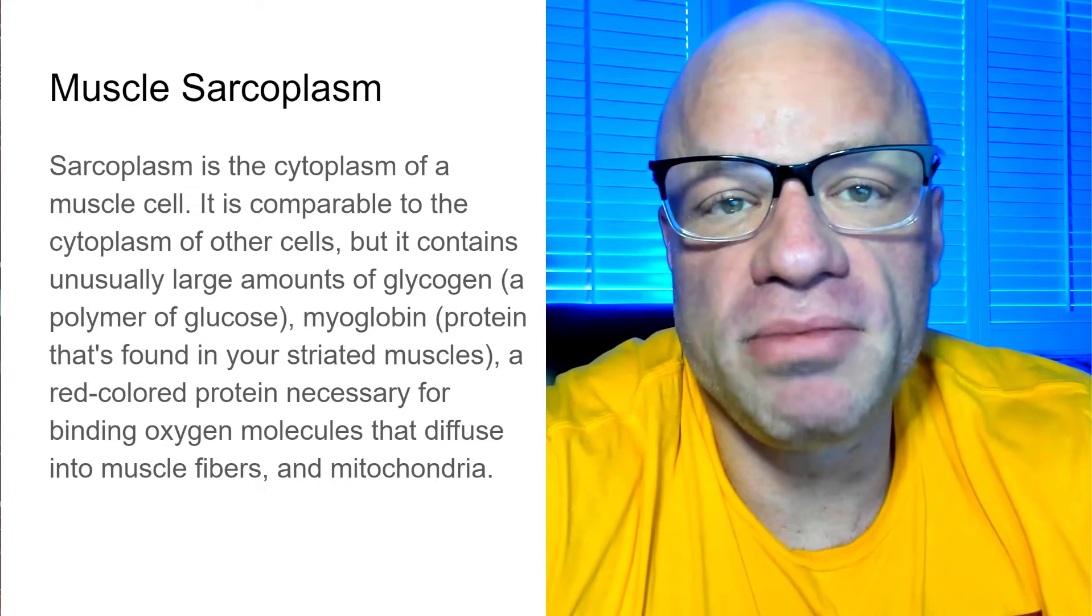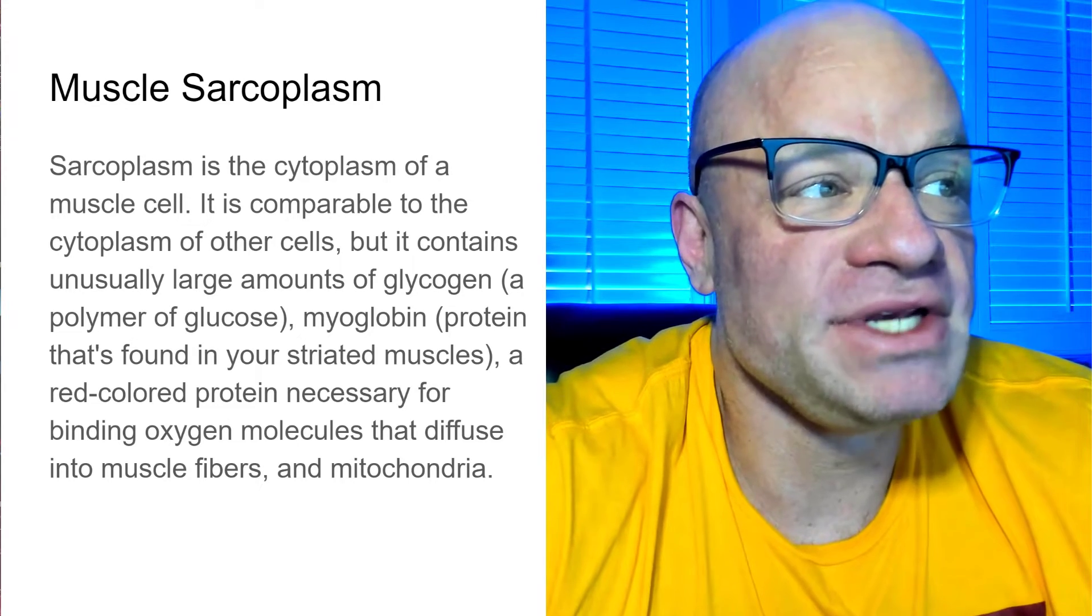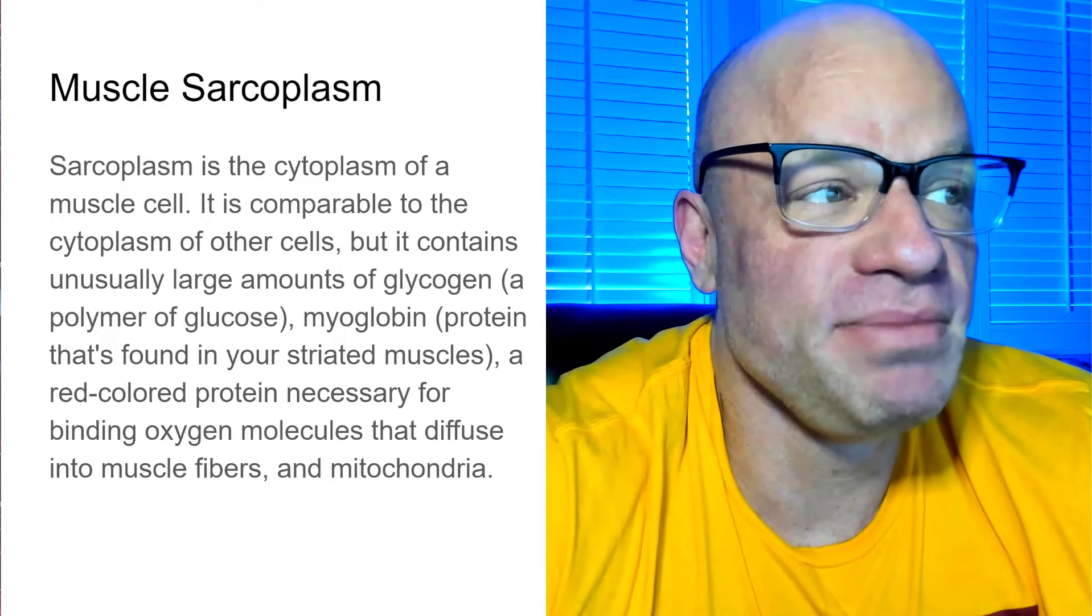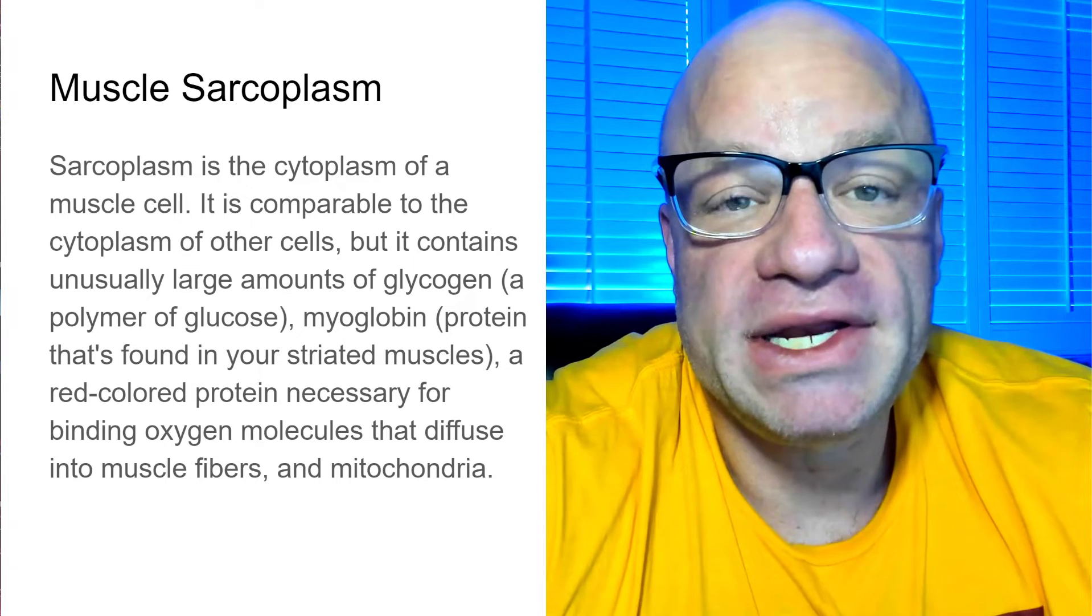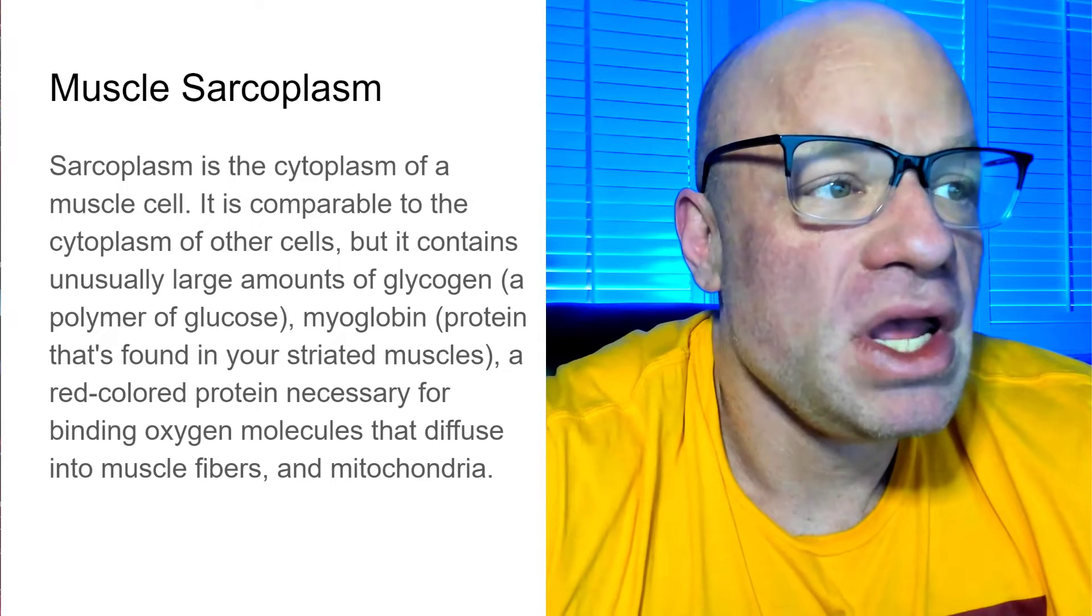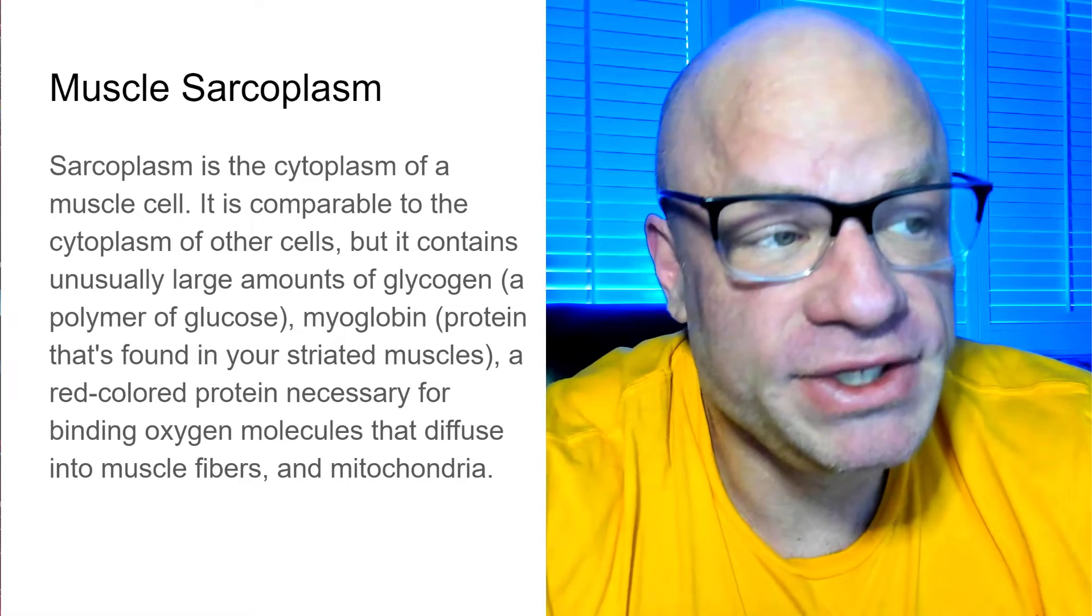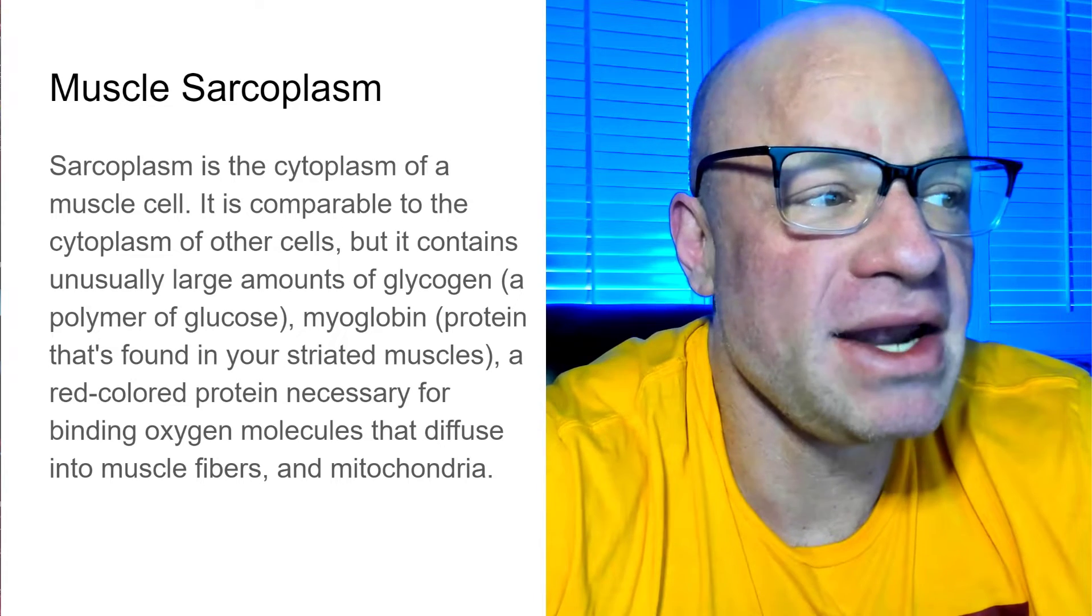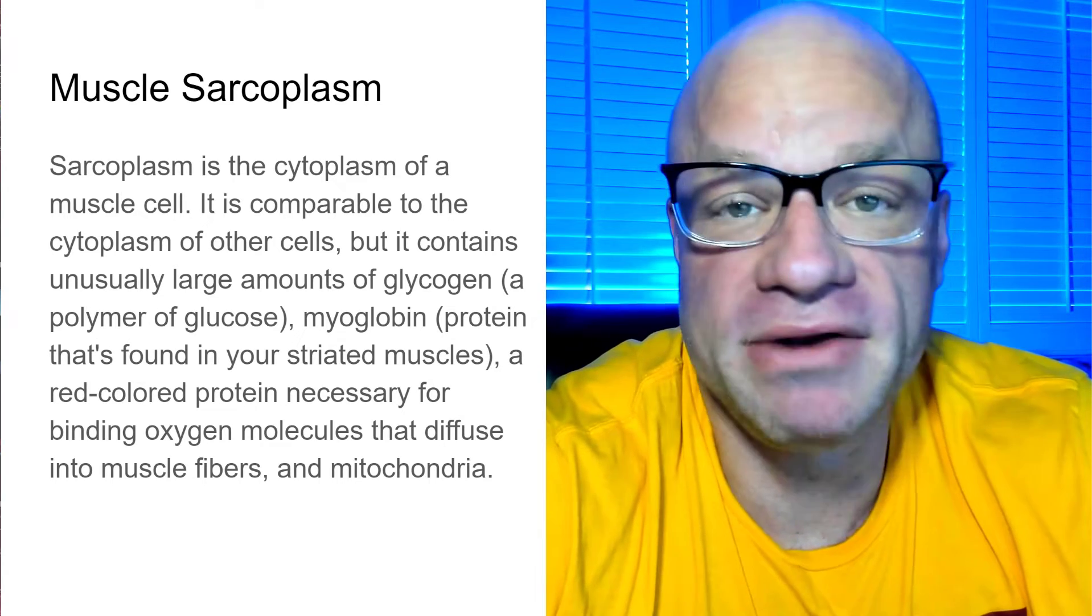What is the muscle sarcoplasm? The sarcoplasm is the cytoplasm of the muscle cell. It is comparable to the cytoplasm of other cells, but it contains an unusually large amount of glycogen, a glucose polymer. It's basically just sugar and water. Myoglobin, which is a protein that's found in your striated muscles. It contains a red-colored protein necessary for binding oxygen molecules that diffuse into the muscle fibers and mitochondria.